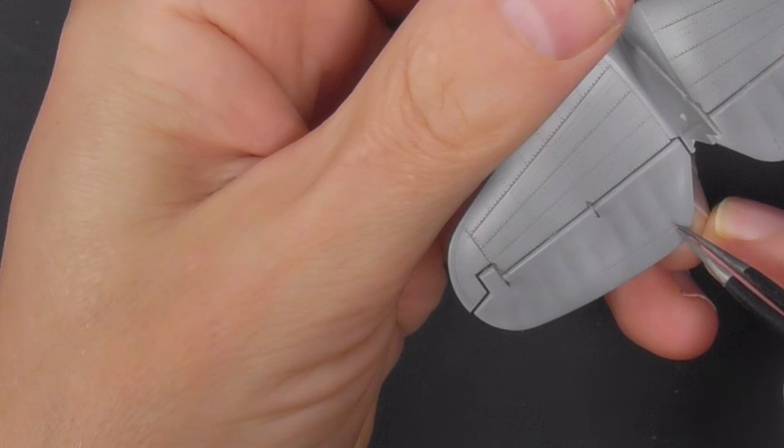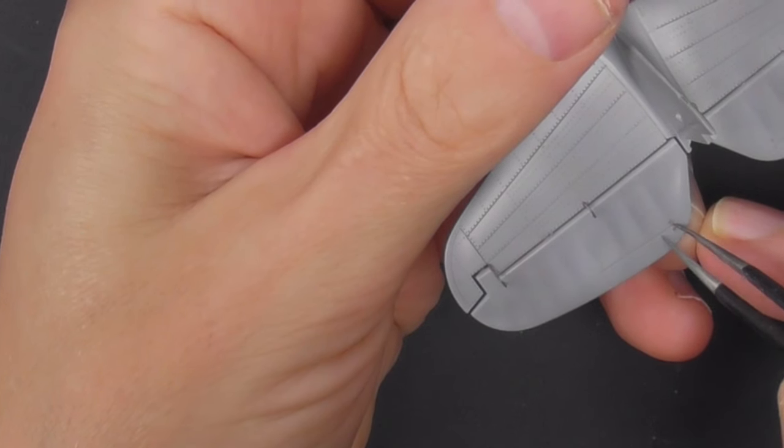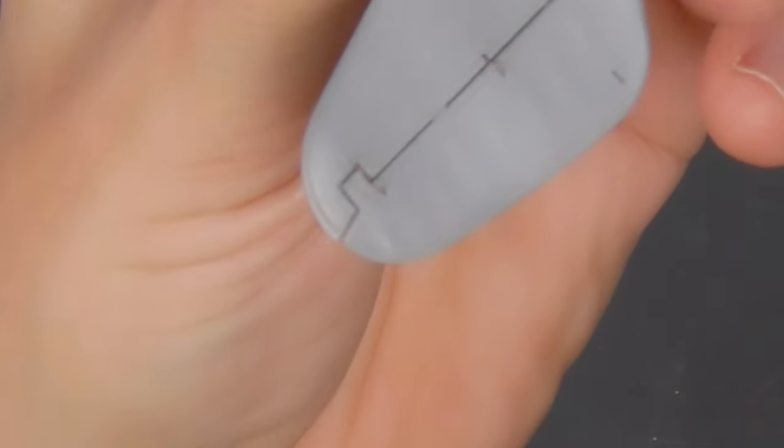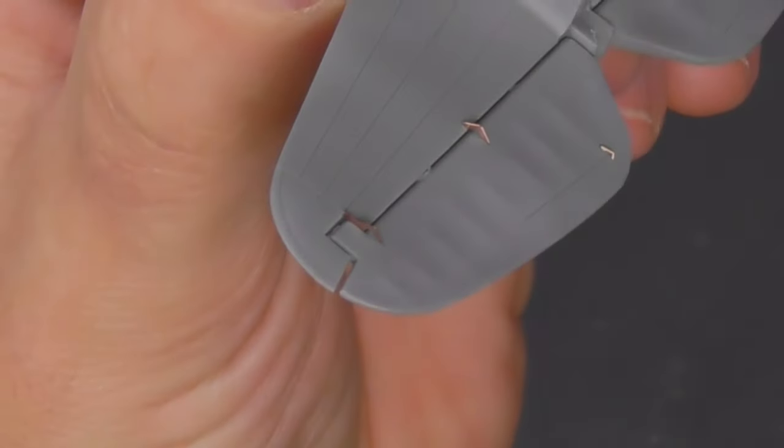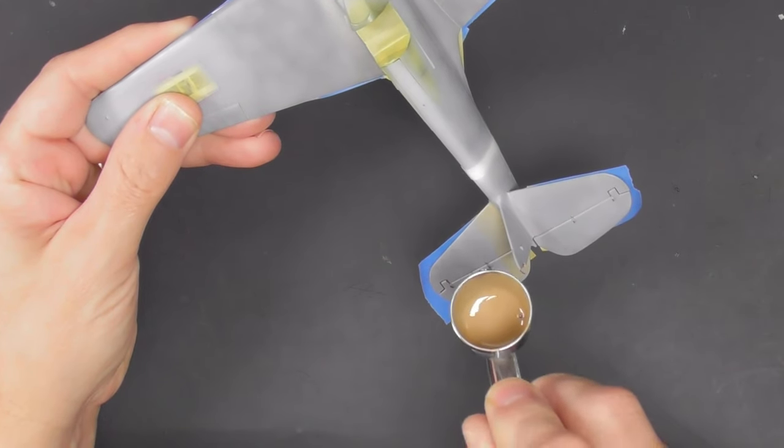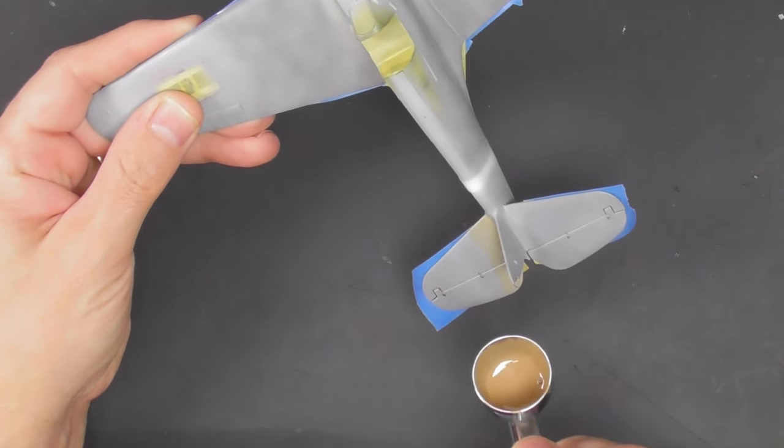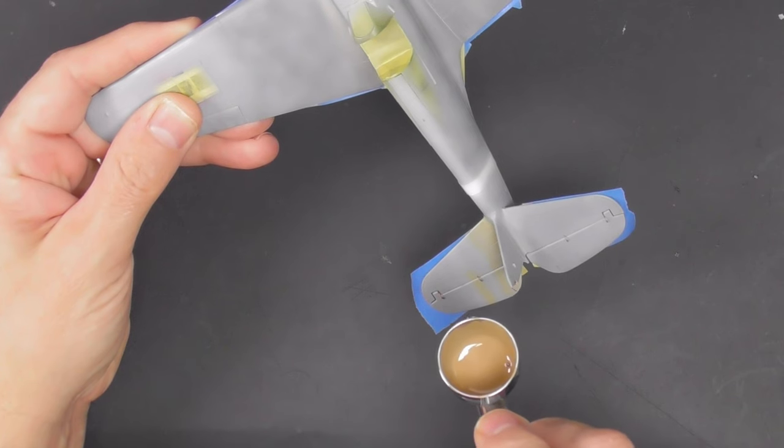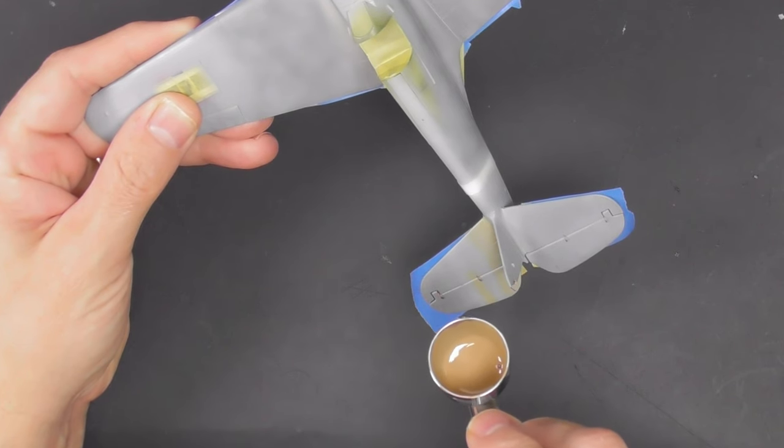There is some photo etch supplied in the kit for the control horns and balances and things like that. So I added them now, just before the upper camouflage, because I thought they would get knocked off at some point. And I did actually lose one, and I thought that was getting away with it lightly, frankly.